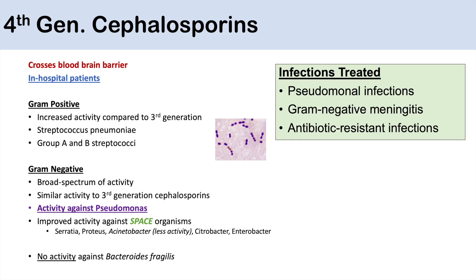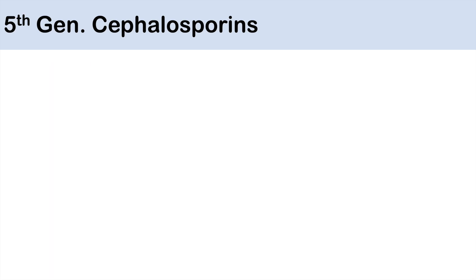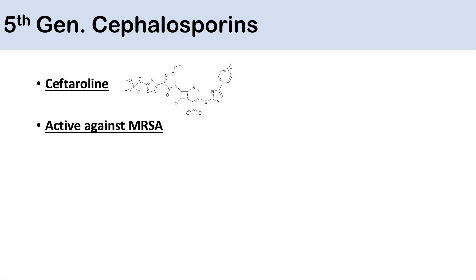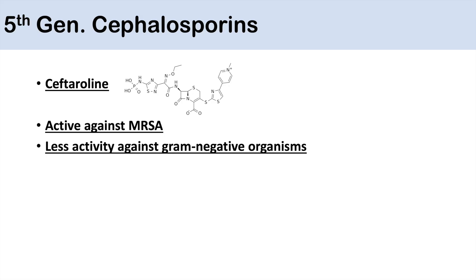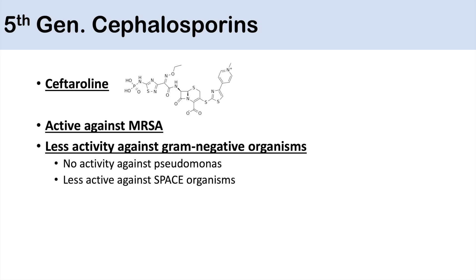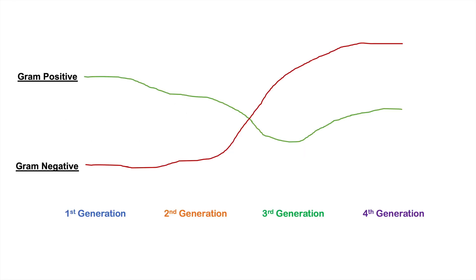Infections treated with fourth-generation cephalosporins include pseudomonal infections, gram-negative meningitis, and antibiotic-resistant infections in general. Because of their broader spectrum, their use is generally reserved for infections with antibiotic-resistant bacteria. Fifth-generation cephalosporins include ceftaroline, which is active against MRSA — unlike all previous generations. However, it has less activity against gram-negative organisms, no activity against Pseudomonas, and is less active against SPACE organisms compared to fourth-generation cephalosporins.